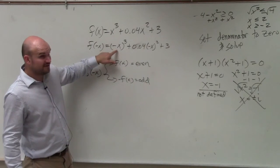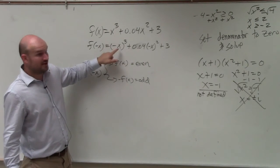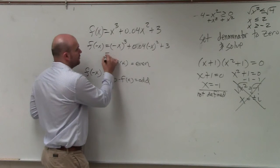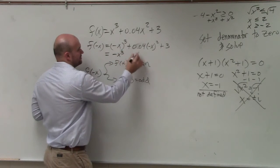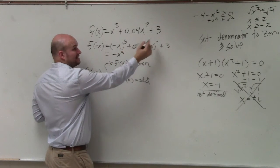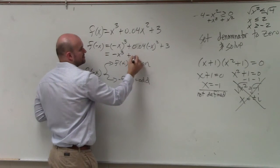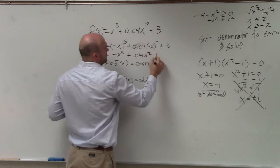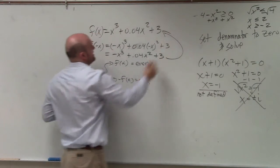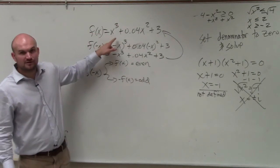Now remember, any negative number or variable raised to an odd power is always negative. Any negative number raised to an even power is always positive. So positive times positive is, so does that take me back to the original function?